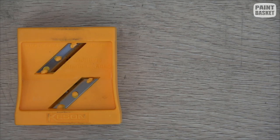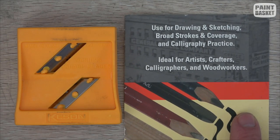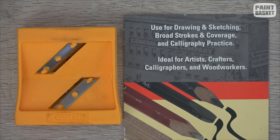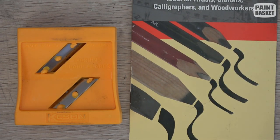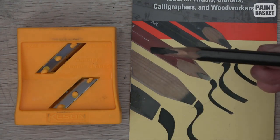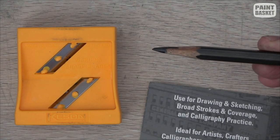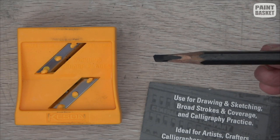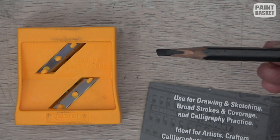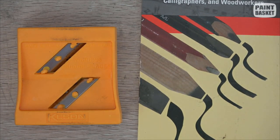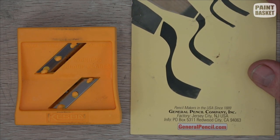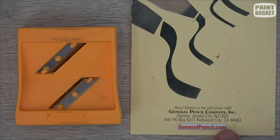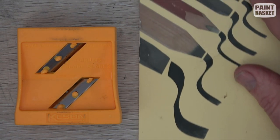And let's move on to this sharpener over here. So let me show you what the packaging said. It says used for drawing and sketching broad strokes and coverage and calligraphy practice. So the idea with this one is that it would shave you a nice chisel point which is great because that's one of the points that I show you how to sharpen using the knife. So if we can use something like this that would obviously save us a lot of time. Let me just show you the bottom of the packaging as well. So it's from over there and it's not a sponsored video or anything like that.